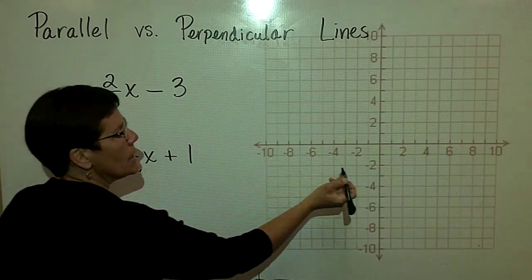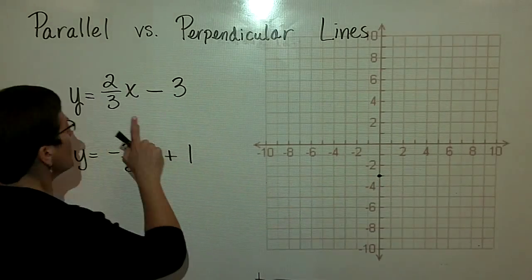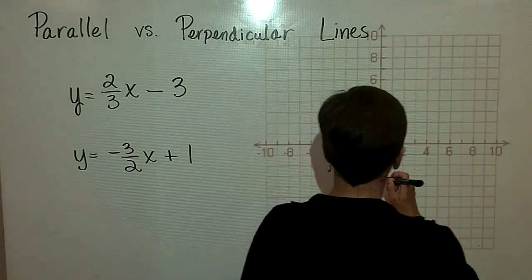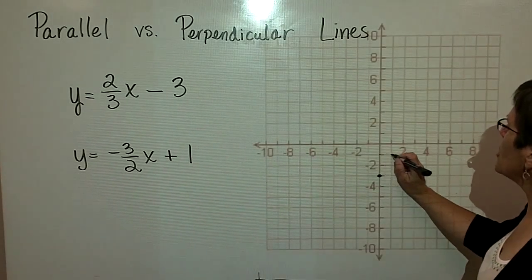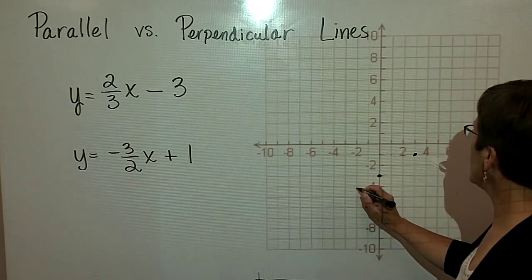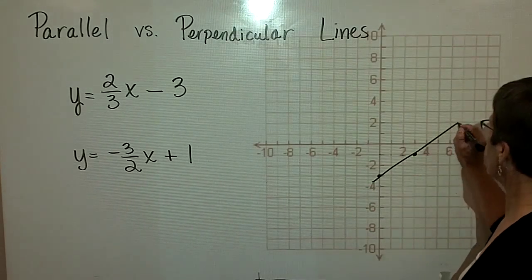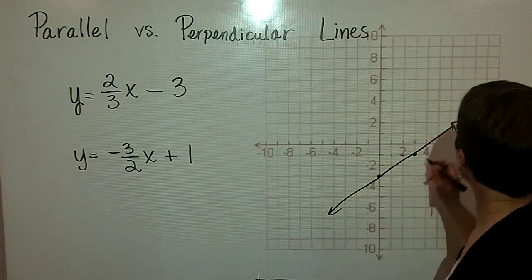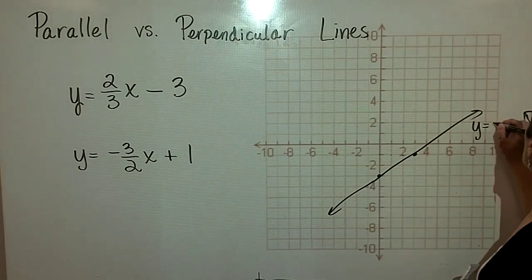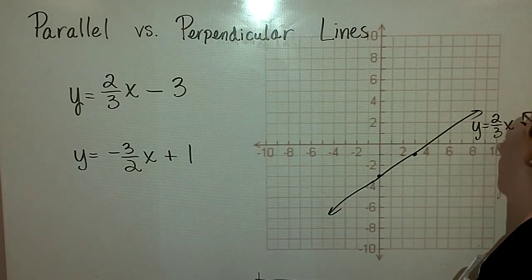The y-intercept for this equation is negative 3, and the slope is a positive 2 thirds. So from here I'm going to go up 2 and over 3 and graph the line. I probably should have used a straight edge here for y equals 2 thirds x minus 3.